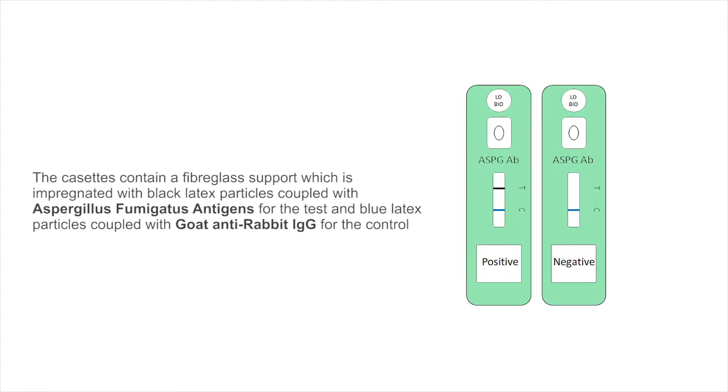The cassette contains a fiberglass support which is impregnated with black latex particles coupled with Aspergillus fumigatus antigens for the test and blue latex particles coupled with goat anti-rabbit IgG for the control.